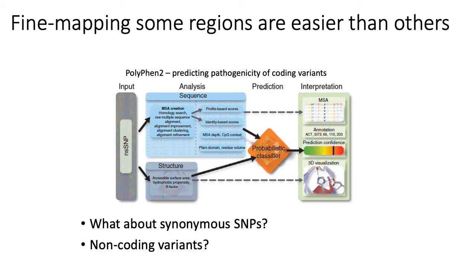Fine mapping tends to be easier for some types of variants than others. If you're lucky and your GWAS study identifies a SNP inside a coding region of a gene, and suppose that variant suggests a non-synonymous mutation in the corresponding protein, then there exist a large number of software packages — for example, a popular one called Polyphen 2 — which basically try to predict the pathogenicity of different coding variants.